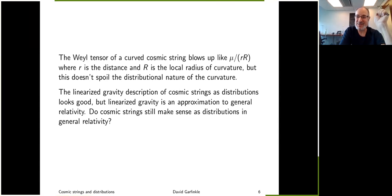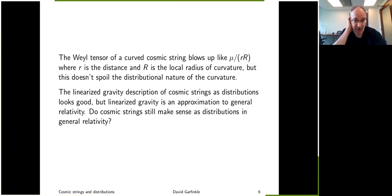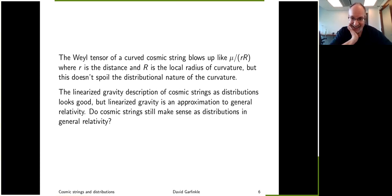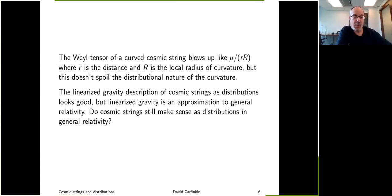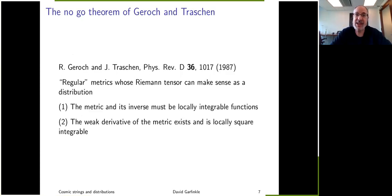That curvature is still perfectly good as a distribution. We can do all this in linearized gravity because it's a linear theory and in linear theories we can use distributions freely. However, linearized gravity is an approximation to general relativity, so we want to ask: how do we describe cosmic strings in general relativity, and do strings still make sense as distributions in general relativity?